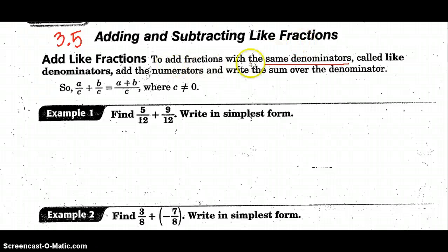To add fractions that have the same denominator, called like denominators, we just have to add the numerators and write the sum over the denominator. So A over C plus B over C, we already have the same denominator, so we just add A plus B.